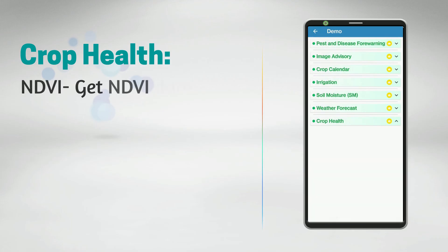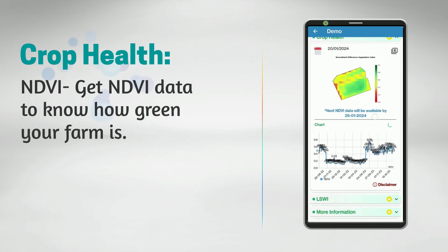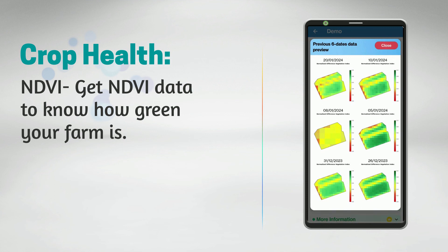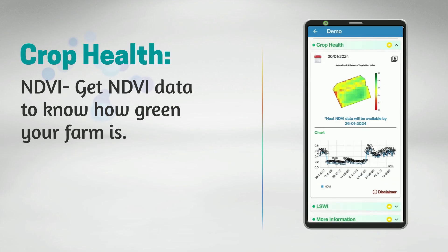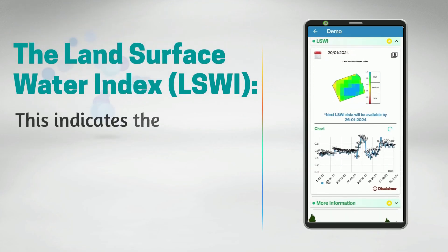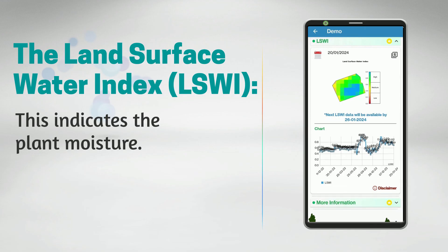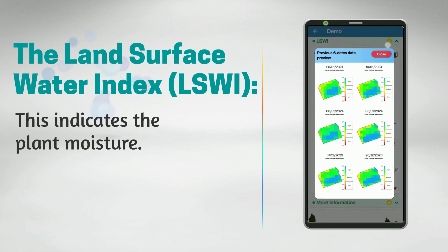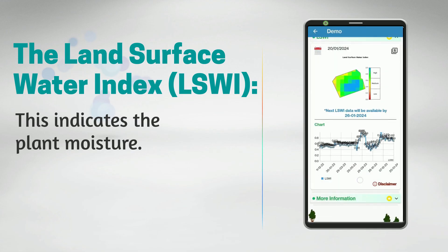Crop Health: This feature is based on NDVI. You can select a particular date to view the NDVI data. The Land Surface Water Index (LSWI) tracks changes in the liquid water content of soil and vegetation, especially in the early part of the season. You can observe the LSWI content of your farm over time.